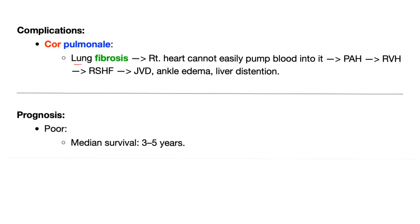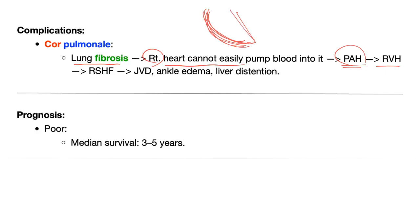Complications: if there is lung fibrosis, the right heart is trying to pump blood against this thick and sick lung. This leads to pulmonary artery hypertension, right ventricular hypertrophy, and right-sided heart failure. Eventually, this leads to jugular venous distension, ankle edema, and liver distension.